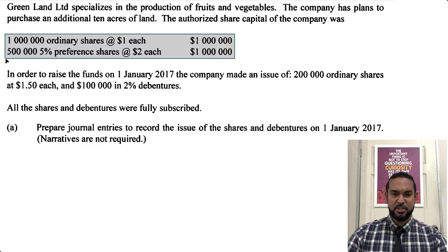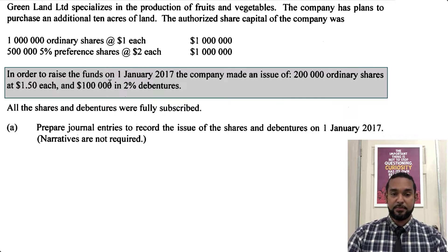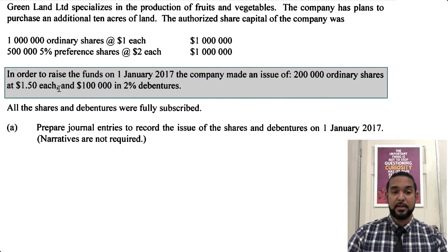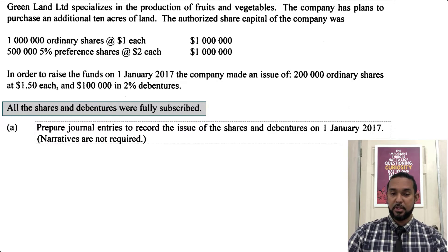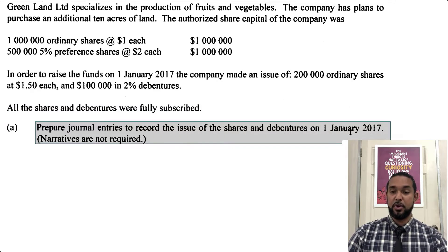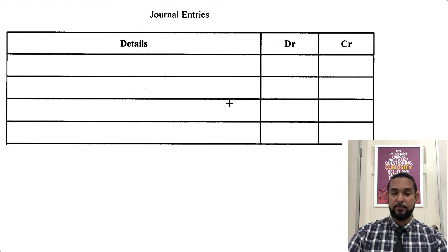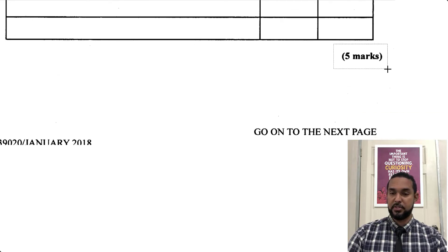Now they want to purchase 10 additional acres of land. In order to raise the funds on 1 Jan 2017, the company made an issue of 200,000 ordinary shares at $1.50 each and $100,000 in 2% debentures. All the shares and debentures were fully subscribed. Prepare the journal entries to record the issue of the shares and debentures on 1 Jan 2017 — narratives not required. The journal format has details, debit column, and credit column. Scrolling down, the total marks awarded for this question is five marks, so it's not supposed to be a very involved question.